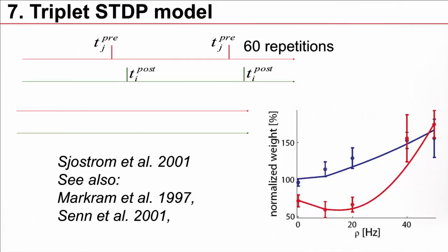For standard STDP experiments, we use pairs of pre- and postsynaptic spikes which come with a certain time difference, for example 10 milliseconds, and which are repeated after a repetition time big T. And then if you do 60 or 70 or 80, maybe 200 of these repetitions pre-post, pre-post, pre-post, you get a certain result.